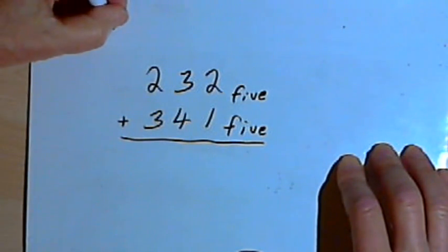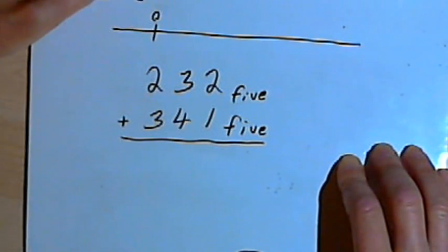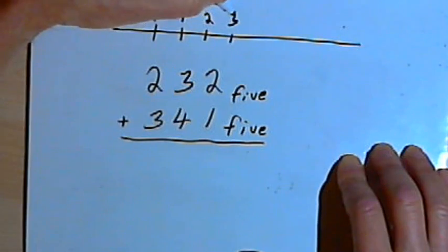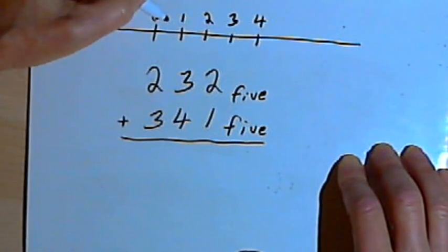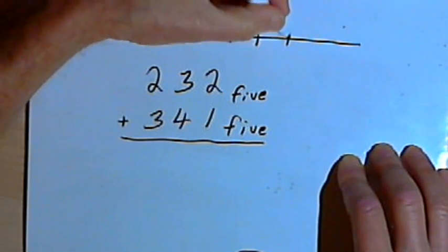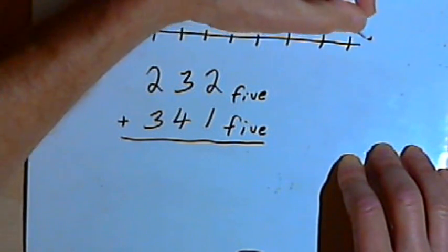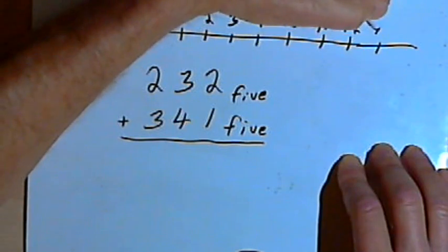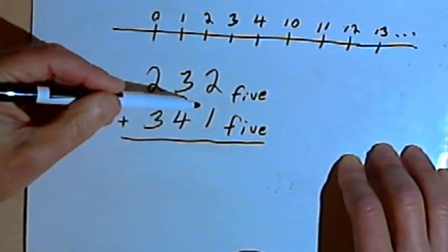So one thing I could do is I could draw a number line. I'm also assuming that I don't have a base 5 calculator handy. So I'm going to draw a number line. I'll start at 0, and then a 1, and a 2, a 3, a 4. Now, in the base 5 world, there's only five digits: 0, 1, 2, 3, and 4. After 4, I have 10, 11, 12, 13, and so on. So let's use the number line to do this addition problem.